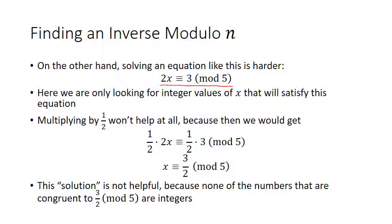In this situation, multiplying by 1/2 or dividing by 2 won't help us at all. The 1/2 would cancel the 2 on the left, but on the right we'd have 3/2 modulo 5. But 3/2 is not an integer, and none of the numbers congruent to 3/2 modulo 5 are integers either. So that's not giving us solutions at all — we need something completely different.